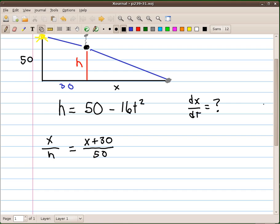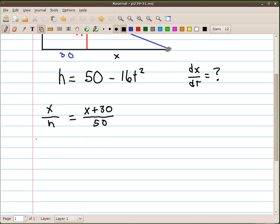And I'm going to go ahead and solve that equation for x. If I cross multiply, I get 50x equals xh plus 30h.